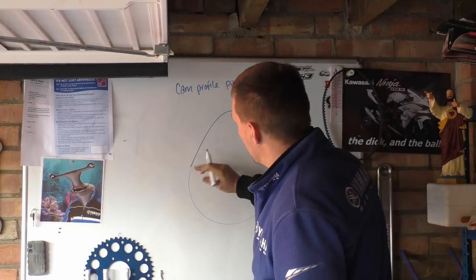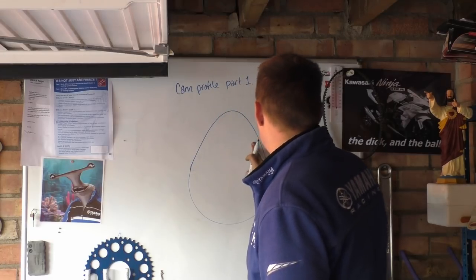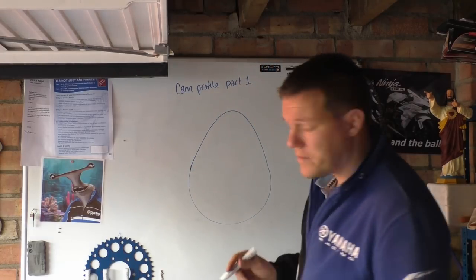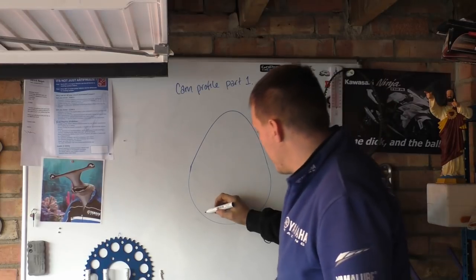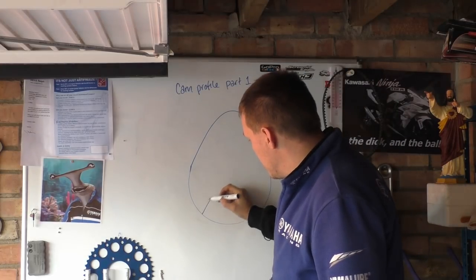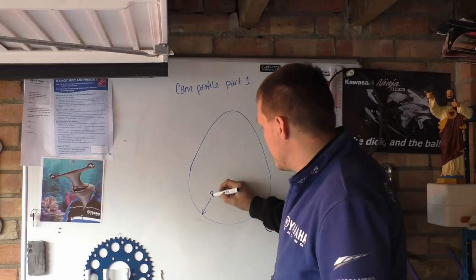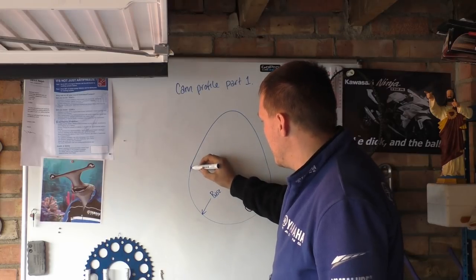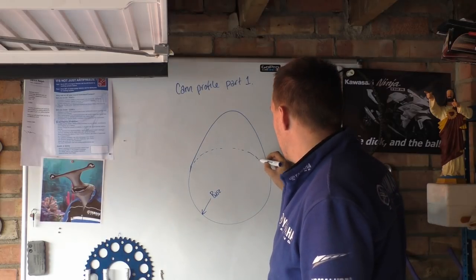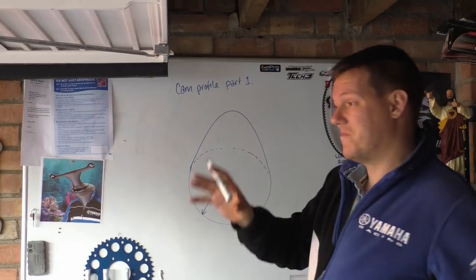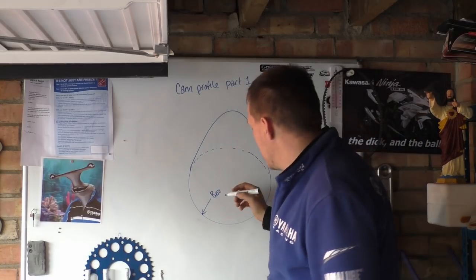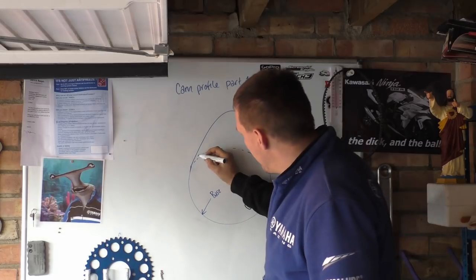What we have is what we call our base circle, which is this. So this is our base circle. Imagine that's the circle - the shaft circle, so to speak. Then what we have is our clearance circle.